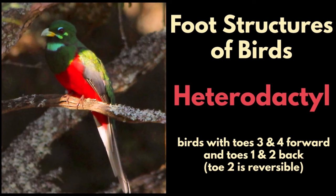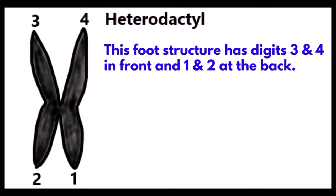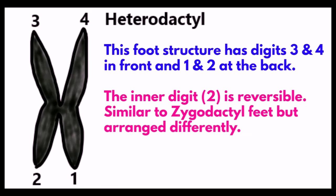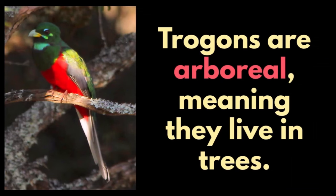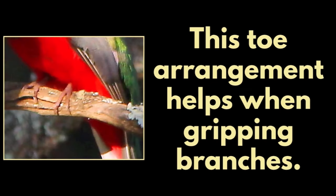Heterodactyl: birds with toes three and four forward and toes one and two back. Toe two is reversible. This foot structure has digits three and four in front and one and two at the back. The inner digit two is reversible, similar to zygodactyl feet but arranged differently. Trogons are the only birds to have this foot structure. Trogons are arboreal, meaning they live in trees, and this toe arrangement helps when gripping branches.